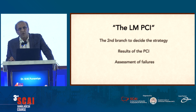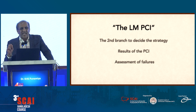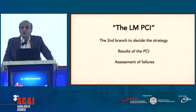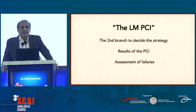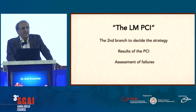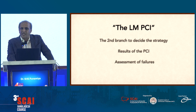In left-main PCI, the most important thing we need to figure out is the second branch, because the second branch decides the strategy. I'm not calling it a side branch because both branches are main — the circumflex and LAD are both very important branches. Therefore, it is one branch and the other. The results of the PCI are important and we need to move away from an angiographically good result to an IVUS-good result, and we need to assess our failures.